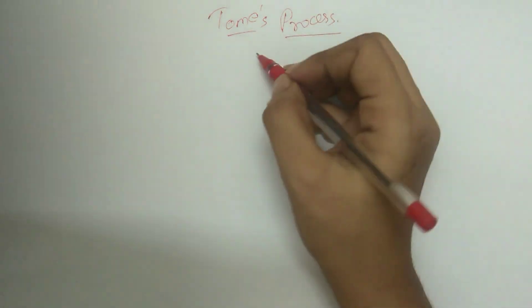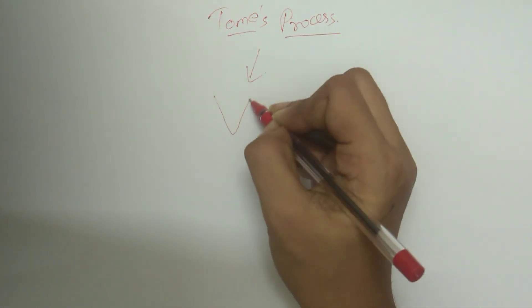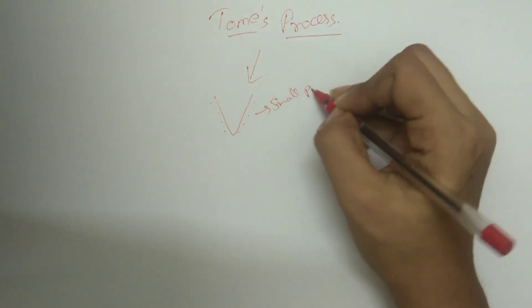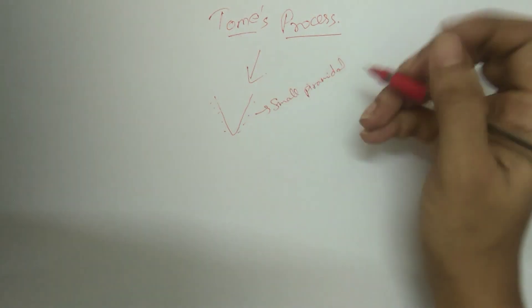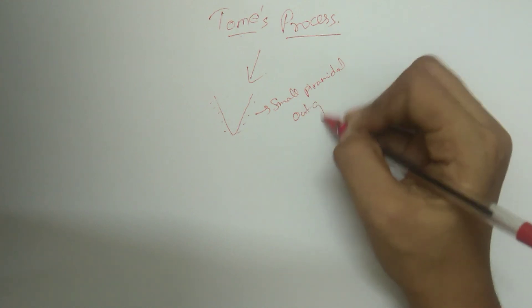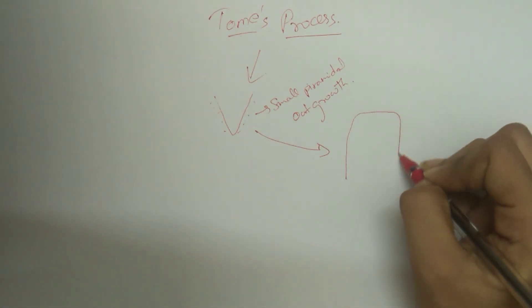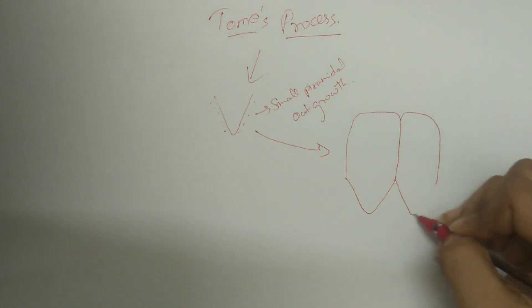Tomes process, which is nothing but a small pyramidal cytoplasmic extension at the distal end of each ameloblast that is partly delineated from the rest of the cells by the distal junctional complex. It consists of secretory granules, microfilaments, microtubules, lysosomes, and mitochondria.